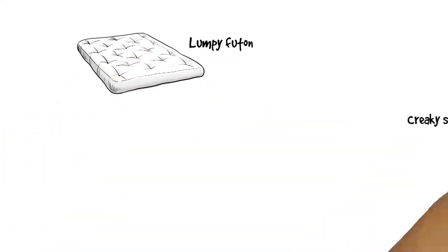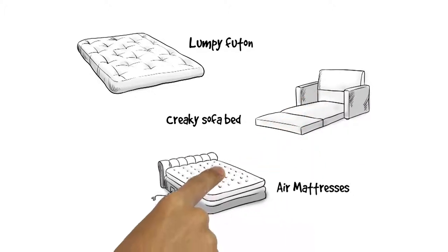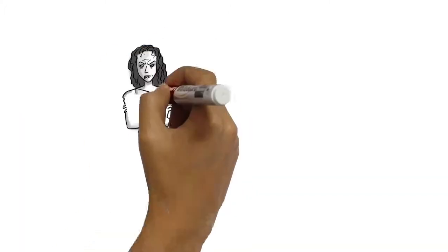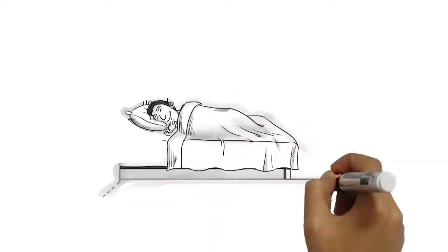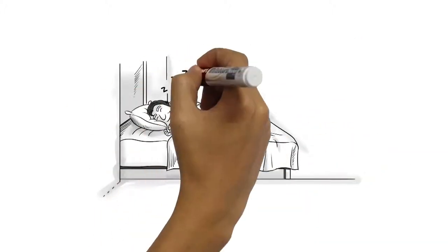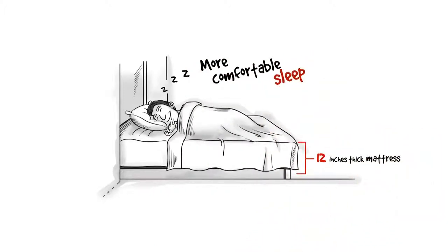Forget that lumpy futon or creaky sofa bed. Air mattresses will leave your guests or family waking up sore and grumpy after a poor night's sleep. Offer your guests a more comfortable stay with our wall bed and use almost any mattress up to 12 inches thick.